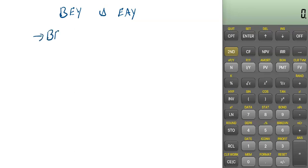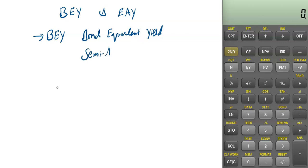BEY, or bond equivalent yield, is calculated on a semi-annual basis. If you calculate the yield of a bond on a semi-annual basis, that is the bond equivalent yield. The majority of bonds in the US are calculated on a six-monthly, semi-annual basis, which is why this convention and name — bond equivalent yield — was established.